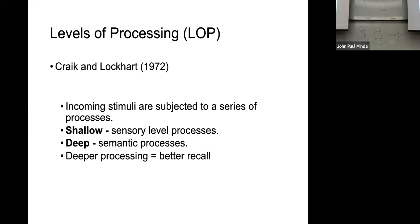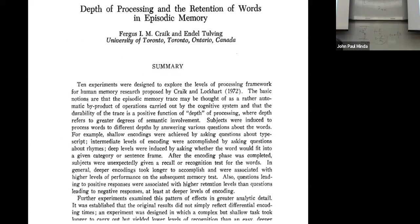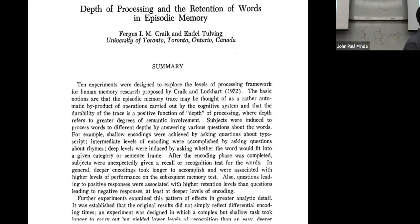Their argument, and what their results suggest, is that shallow processing and deeper processing differ because deeper processing generally results in better recall. This is a study of the depth of processing and the retention of words. A lot of these 1970s studies look at people learning lists of words — it's a convenient way to study memory, though not the only aspect of it.